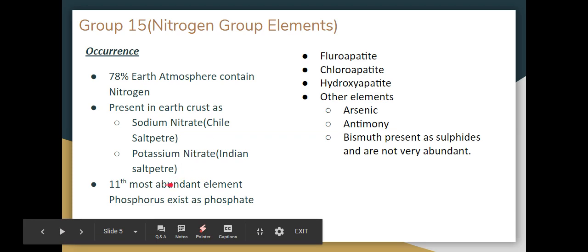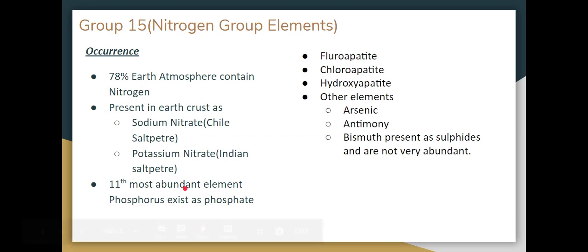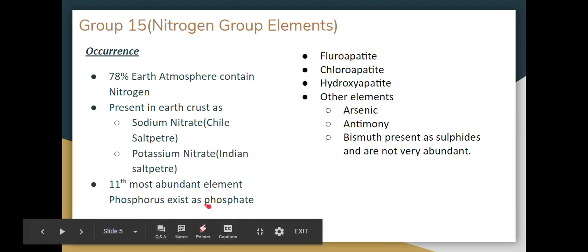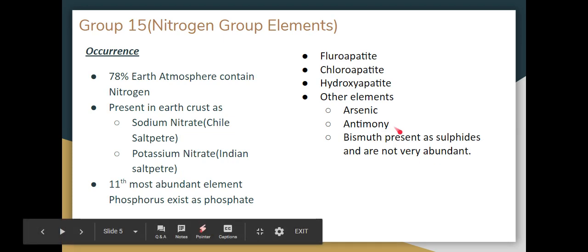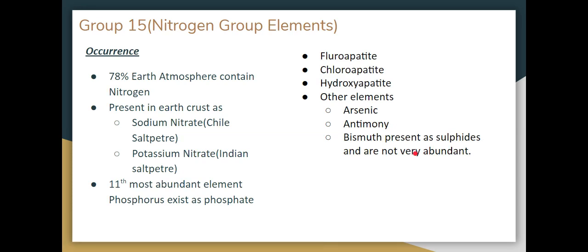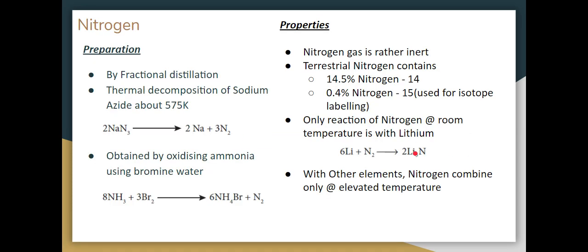Potassium Nitrate. Next, nitrogen in any form exists as phosphate: fluoroapatite, chloroapatite, hydroxyapatite. The other elements are arsenic, antimony, bismuth, present as sulfides and are not very abundant.